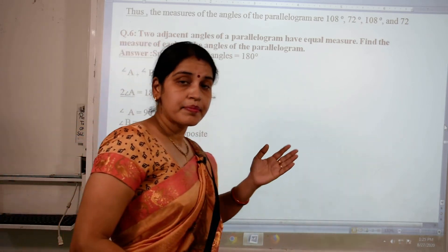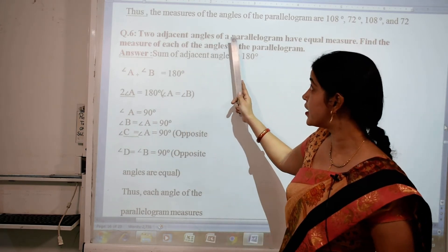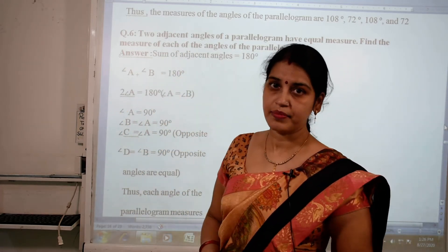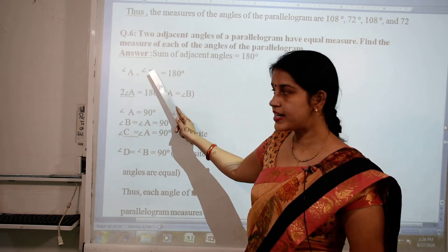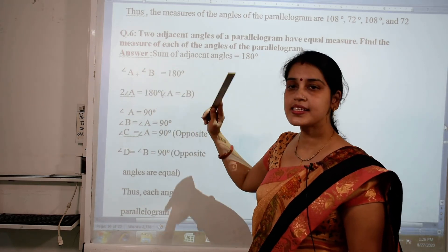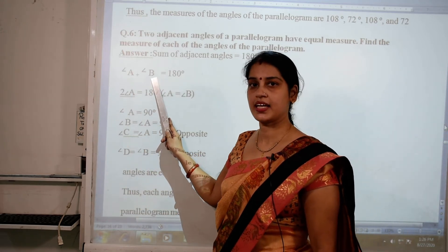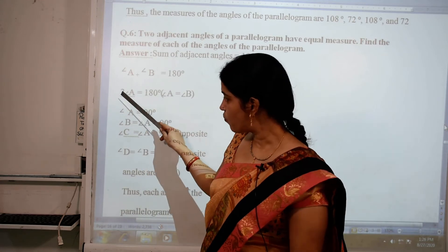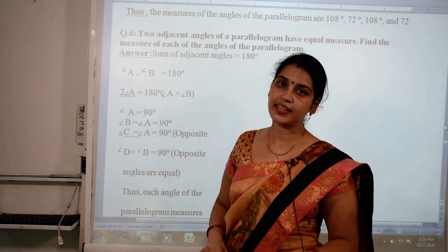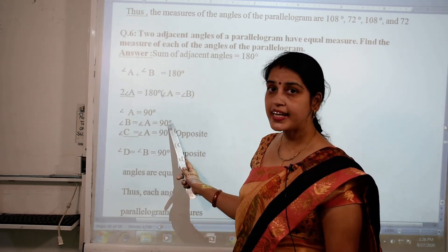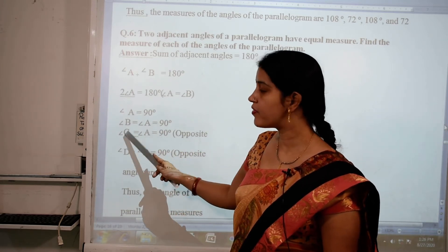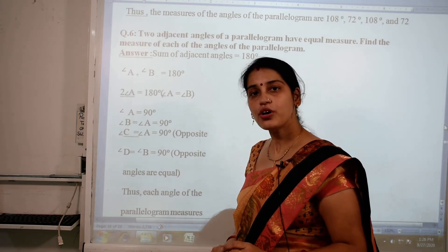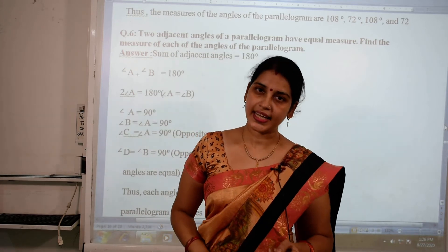Next question: two adjacent angles of a parallelogram are equal; find the measure of all angles. Since the sum of adjacent angles is 180 degrees and both angles are equal: A plus A equal 180, so 2A equal 180, giving angle A equal 90 degrees. Since A and B are equal, B is also 90 degrees. Since opposite angles are equal, A equals C and B equals D, so all four angles are 90 degrees.